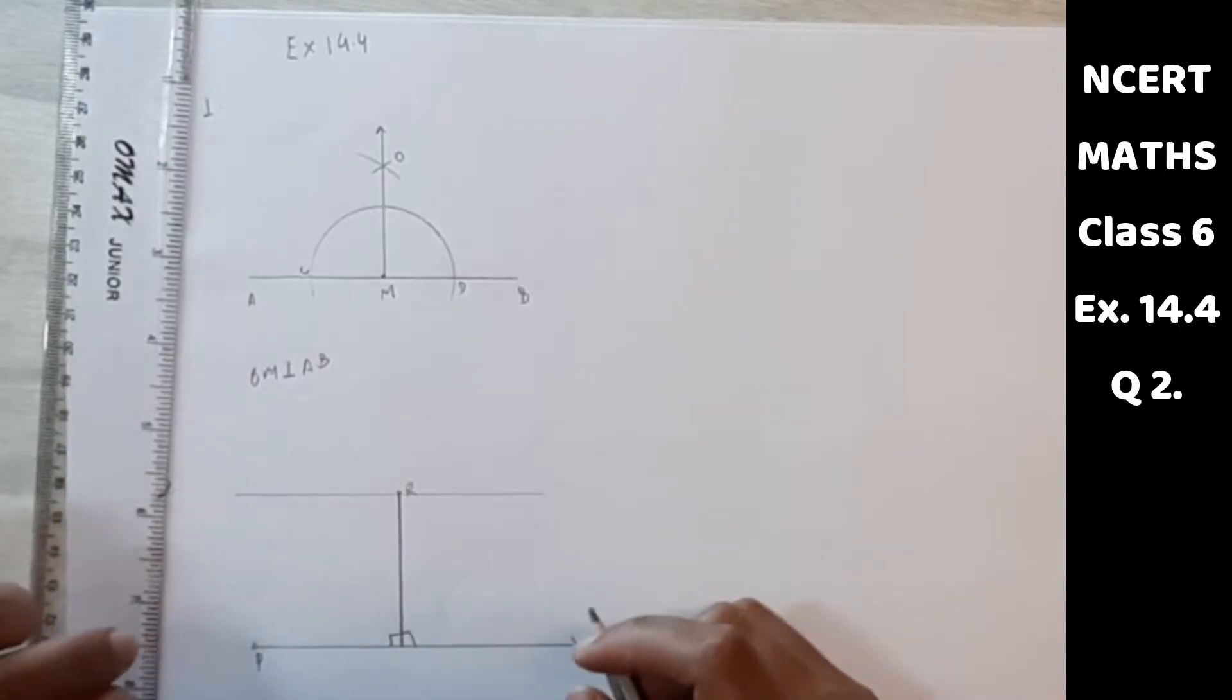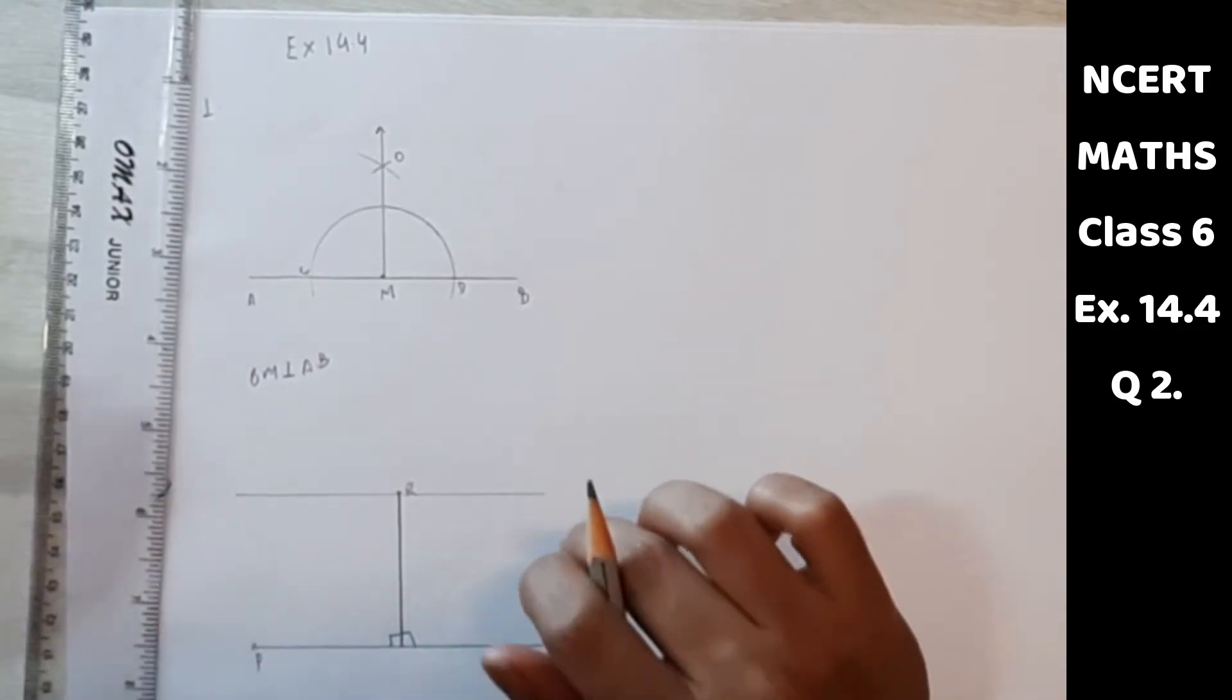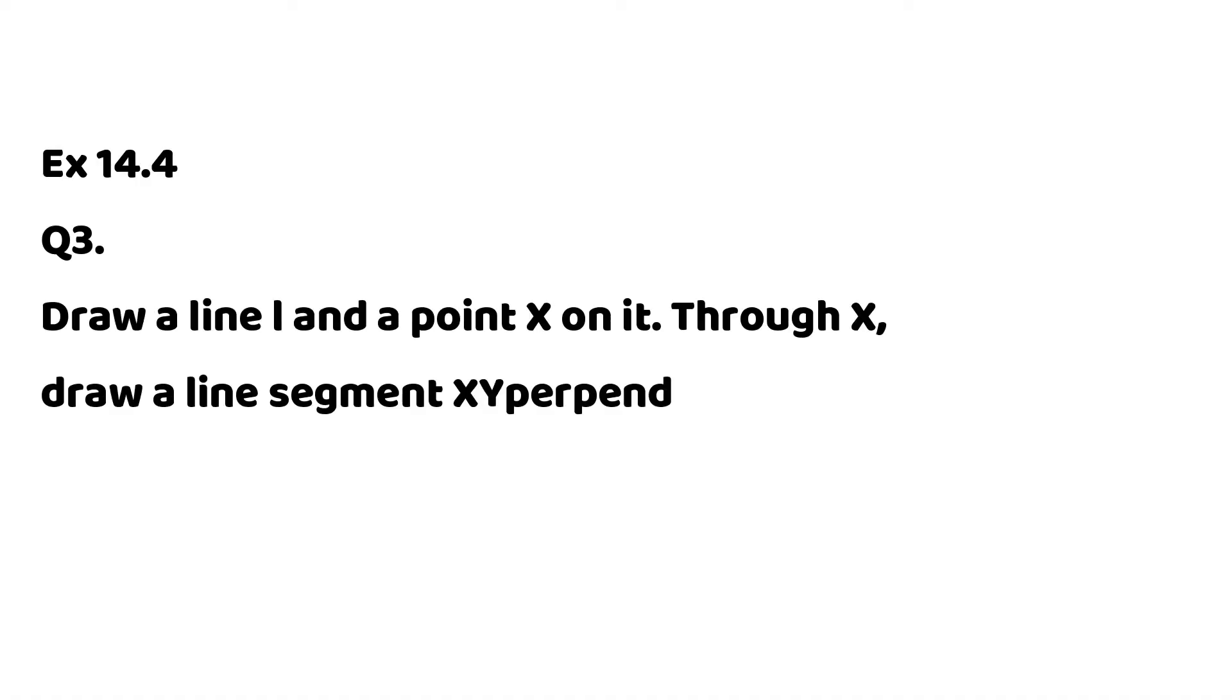So with the help of set square, you can make a perpendicular line through R. So this is the answer for question number 2. Now question number 3.